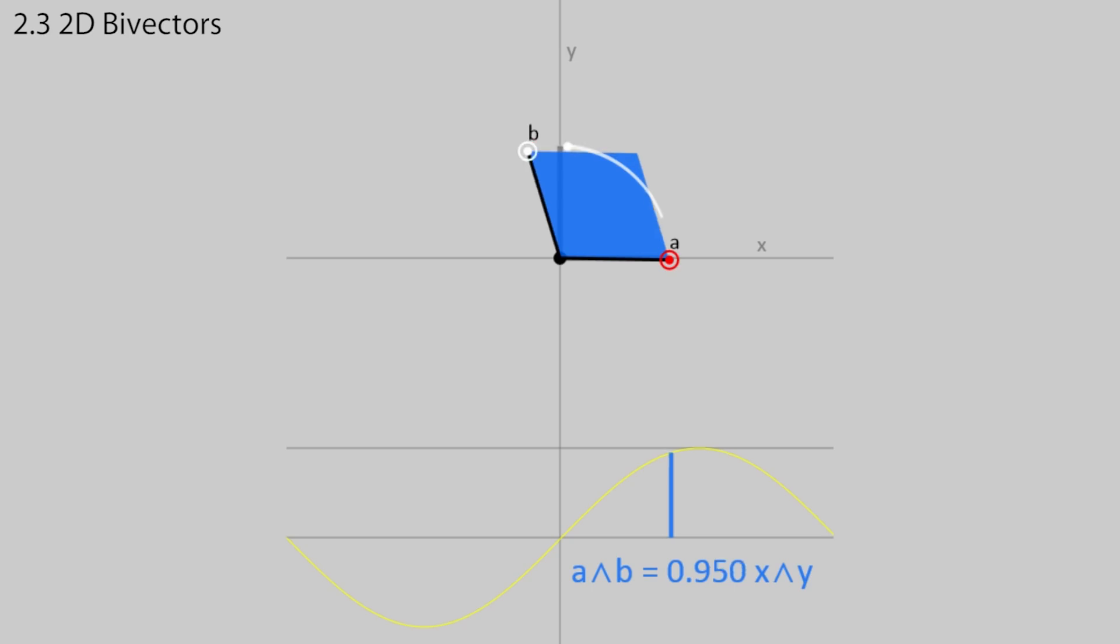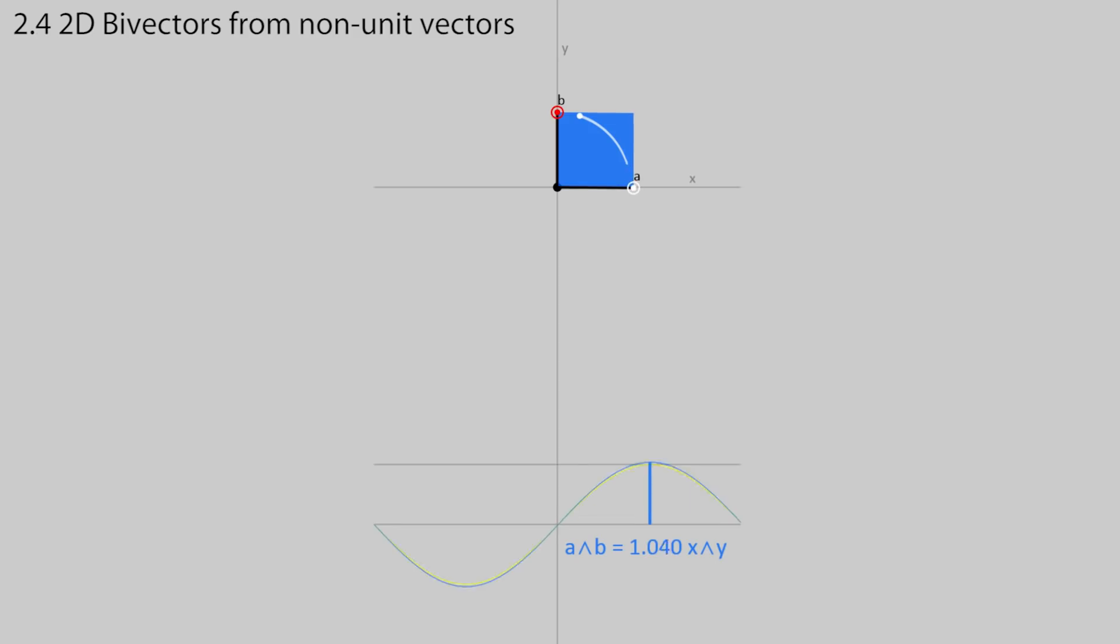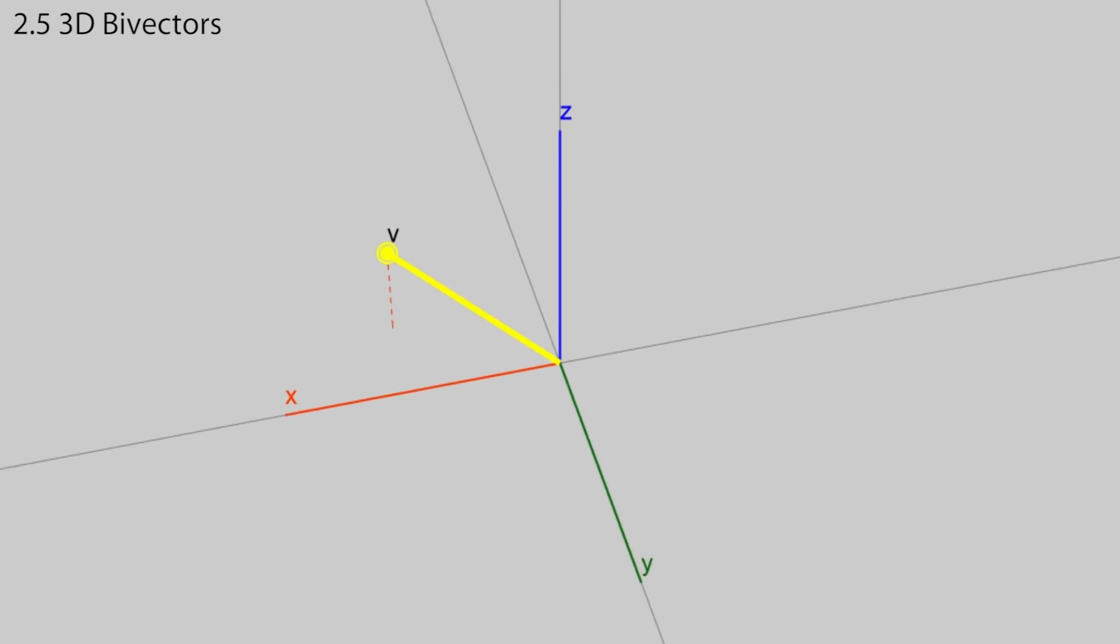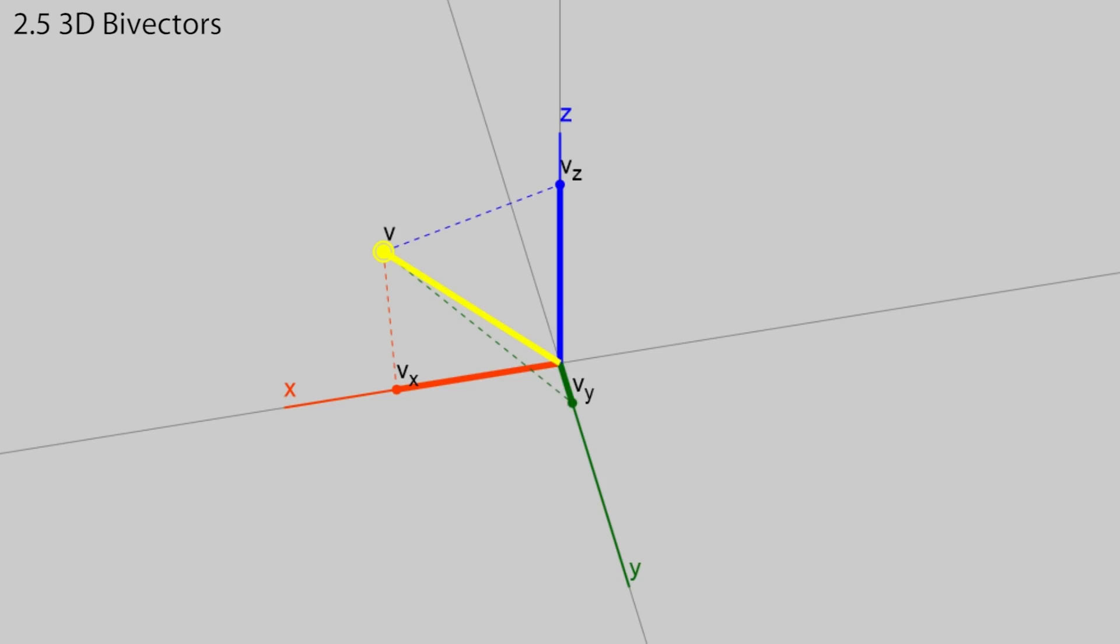The properties of the outer product are suited to capture the properties of planes and rotations. The vectors obviously don't have to be unit lengths, and here the restriction is removed. The signed area of the parallelogram is proportional to the lengths of both vectors. So for example, doubling the length of one vector doubles the area. We can get the actual value by plugging in the vectors in component form. We just need to expand the product and delete the terms that square to 0.